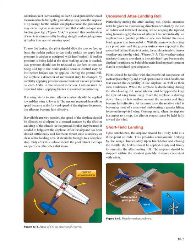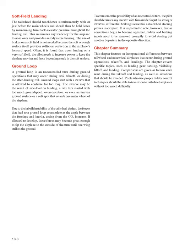For a short field landing, upon touchdown the airplane should be firmly held in a three-point attitude to provide aerodynamic braking by the wings. Immediately upon touchdown, close the throttle and apply brakes evenly and firmly to minimize the after-landing roll. For a soft field landing, the tailwheel should touch down simultaneously with or just before the main wheels, and firm back elevator pressure should be held throughout the landing roll to minimize noseover tendency and provide aerodynamic braking. Brakes are not needed on a soft field, as the surface itself provides sufficient deceleration. On a very soft field, the pilot may need to increase power to prevent the airplane from becoming stuck.